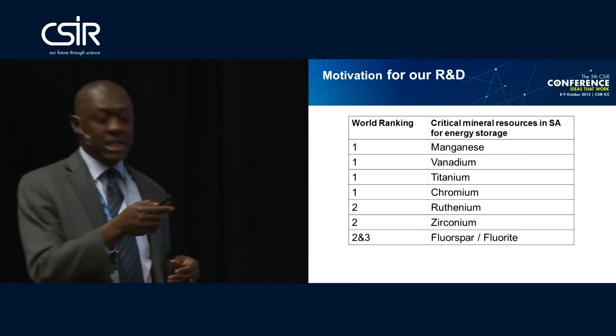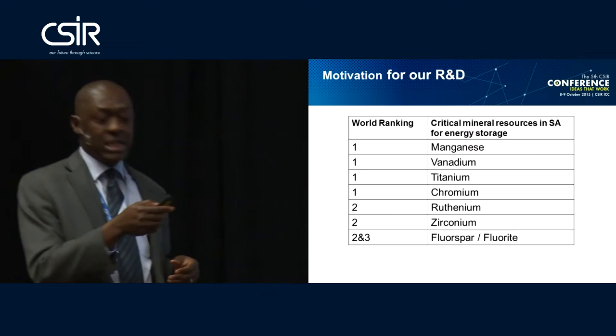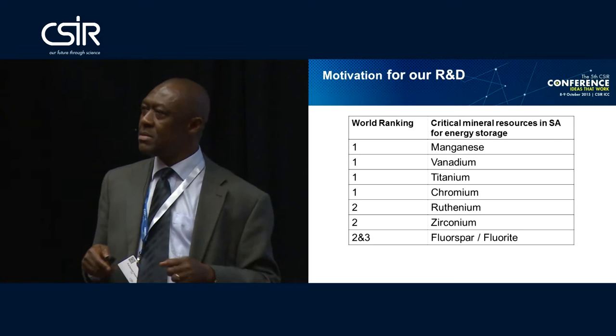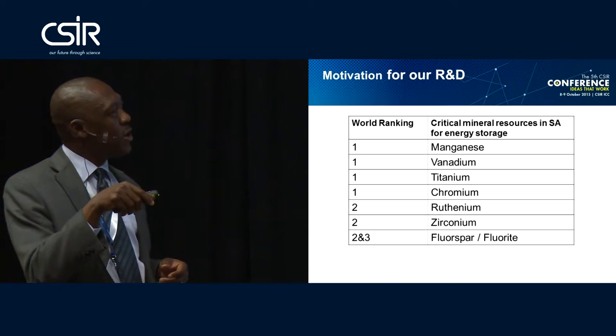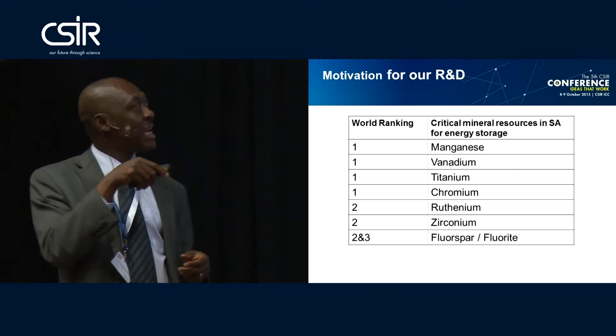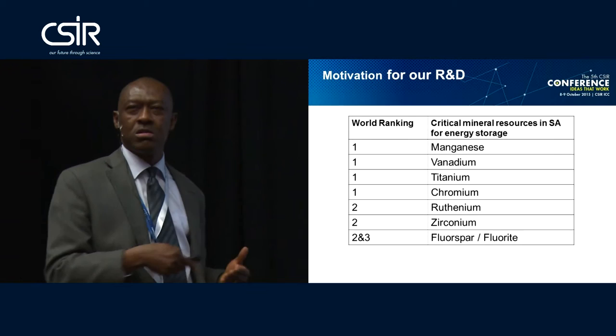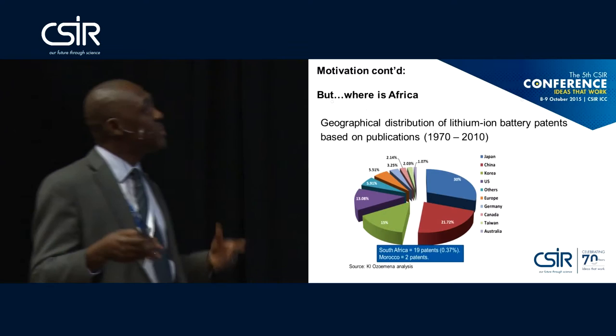In terms of world ranking, these are the critical minerals required for developing batteries and supercapacitors — manganese, vanadium, titanium, chromium, ruthenium. South Africa is number one in the world in terms of these mineral resources. So it doesn't make sense that we don't do research in this area given the abundance of minerals. The question is: where is Africa in, say, lithium-ion batteries?